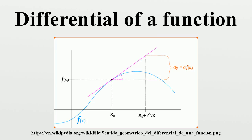The total differential is then rigorously defined, and with this definition, one has, as in the case of one variable, the approximate identity holds in which the total error can be made as small as desired relative to the increment by confining attention to sufficiently small increments. The total differential is used in estimating the error delta f of a function f based on the errors delta x and delta y of the parameters x and y, assuming that the interval is short enough for the change to be approximately linear.